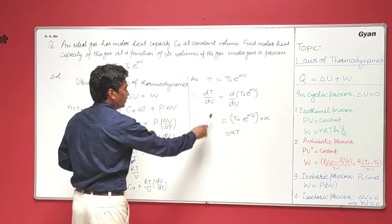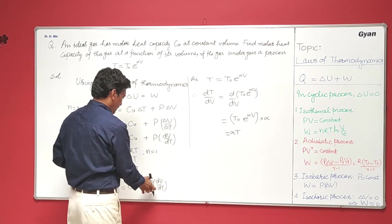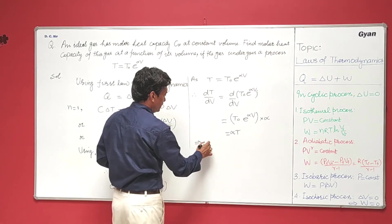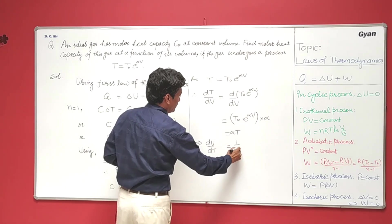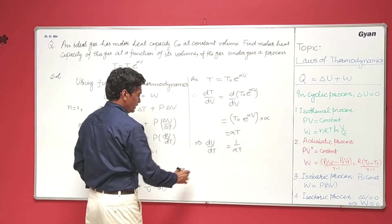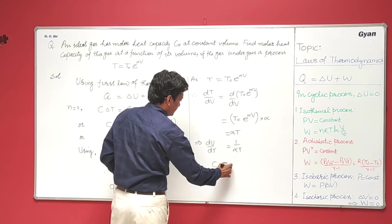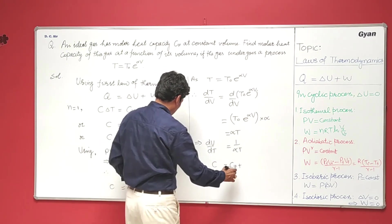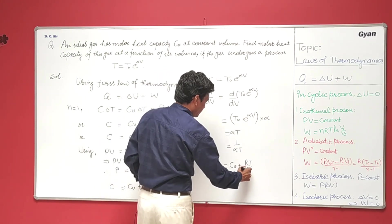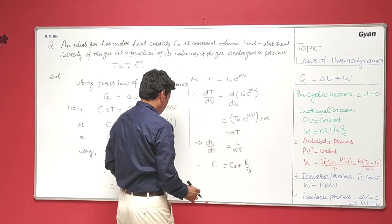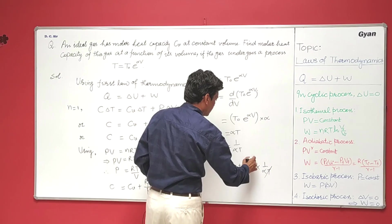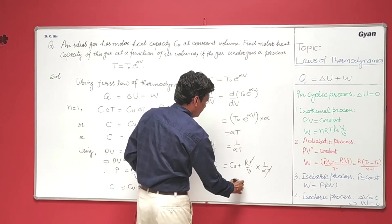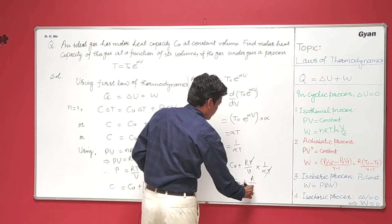So putting this value of dV over dT, when you invert it, this becomes 1 over alpha T. So C equals Cv plus RT over V times 1 over alpha T. The T will cancel out, giving us Cv plus R over alpha V.